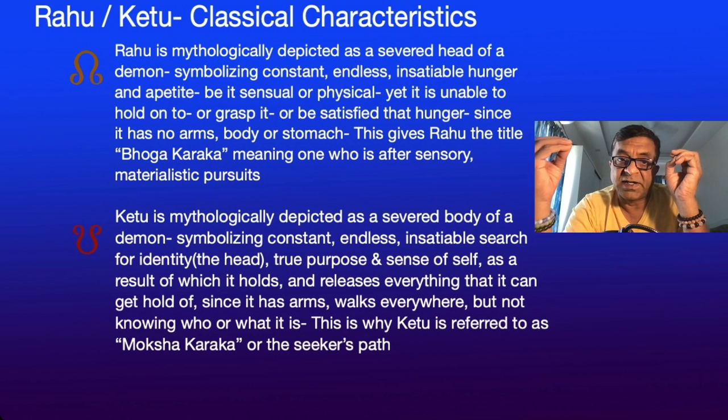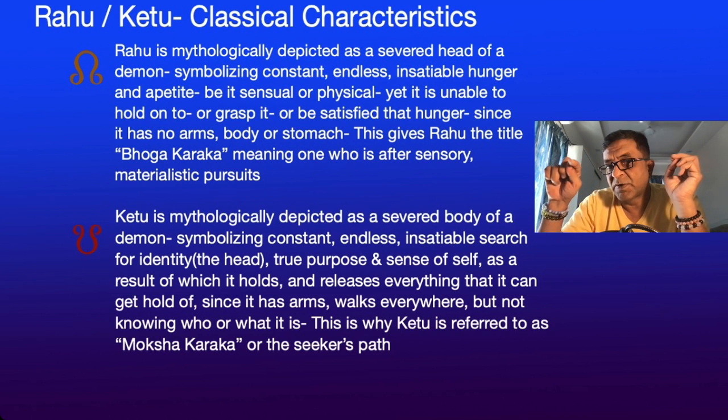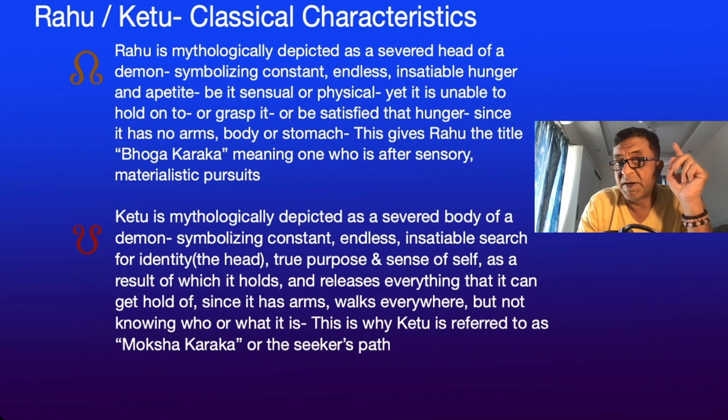Since Ketu has arms and walks everywhere, it goes through life from place to place, people, situation, circumstances, but not knowing who or what it is. This is why Ketu is referred to as moksha karaka — the seeker's path, the one energy in us which seeks something. That's the classical interpretation, and now we shall see how this plays out in the modern interpretation.